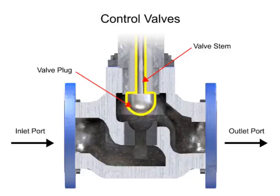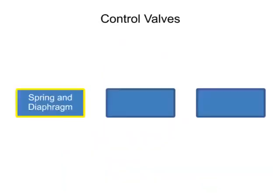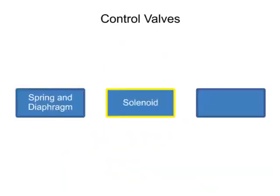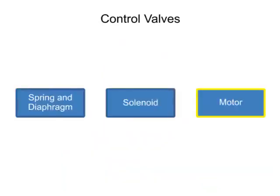Three actuator types are used in control valves, and they include spring and diaphragm, solenoid, and motor.